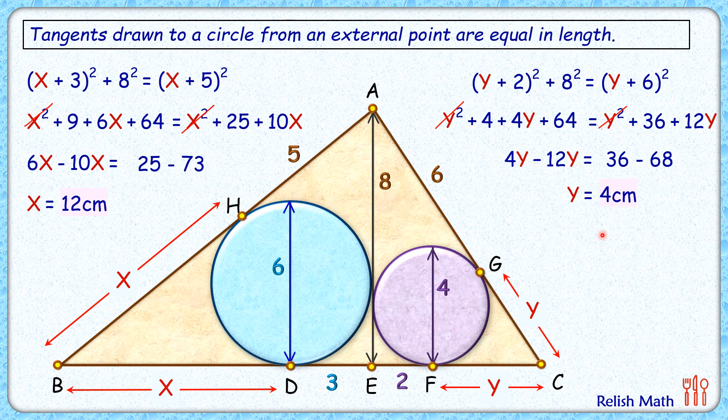Now that we have x and y, let's find the area of the triangle. Area of triangle is half of base times height. Here base is BC, height is AE. Height is 8 cm. BC will be x, that is 12, plus 3, plus 2, plus y which is 4, so that's 21.